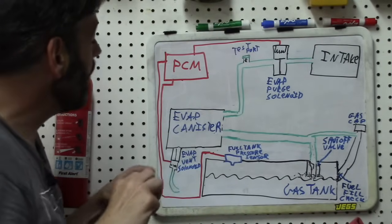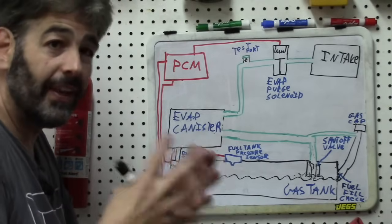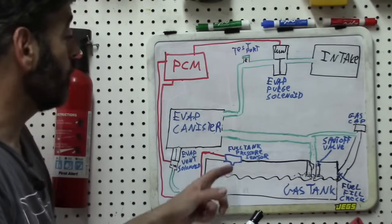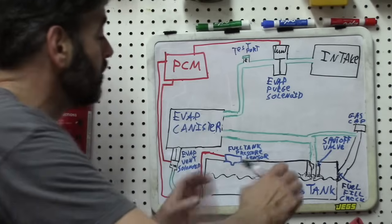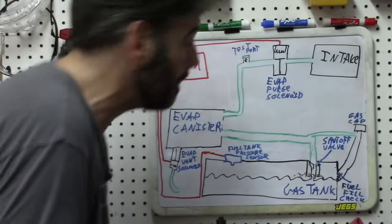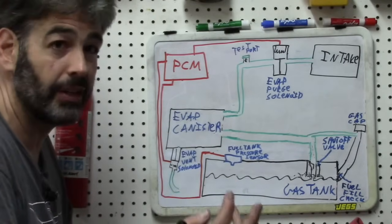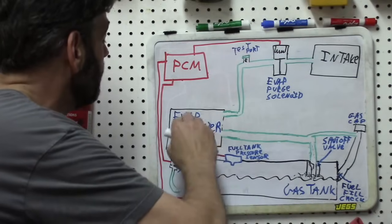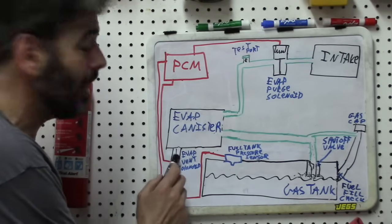Now, once your vapors get into the system, they get to your charcoal canister, and this activated charcoal retains those vapors for further use. Also, off of your fuel tank is going to be a fuel tank pressure sensor, not a fuel pressure sensor like on the rail, and it measures the pressure in the system. This is going to be directly connected up to your PCM. Your PCM is going to measure the pressure. This pressure sensor is the critical component that tells whether you have leaks in the system. Now, you've got your charcoal canister where your vapors ultimately have entered. You will have two exits from the charcoal canister.